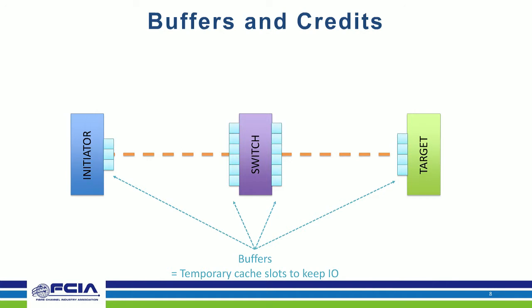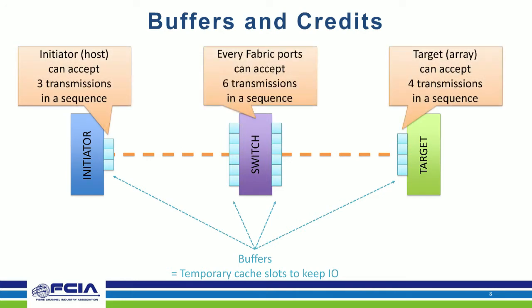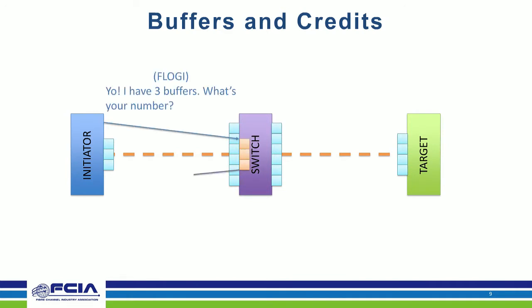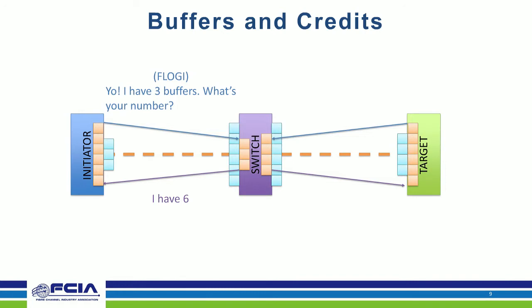There are multiple different buffers at different ends of the connectivity chain — say the initiator has three, the target has four, and the switch has six. This is communicated during the normal log-in to the fabric. When the FLOGI message is sent by an initiator plugged into the switch, part of that message tells the switch how many buffers it has. The switch's acknowledgment carries the number of buffers the switch has. The same happens at the target level.